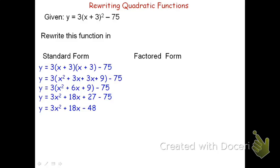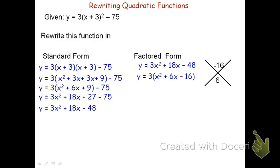To find the factored form, I take the standard form and rewrite it. Because it's not a 1x squared, I can't use just the diamond problem directly — I need to factor out the GCF first. Each term, 3x squared, 18x, and negative 48, is divisible by 3. Factoring out 3 gives y equals 3 times quantity x squared plus 6x minus 16. Now it's a 1x squared, so I can use the diamond problem: find numbers that multiply to negative 16 and add to 6. That's 8 and negative 2, since 8 times negative 2 is negative 16 and 8 minus 2 is 6. The factored form is y equals 3 times quantity x plus 8 times quantity x minus 2.